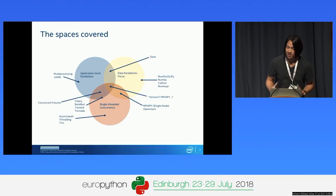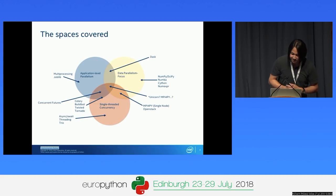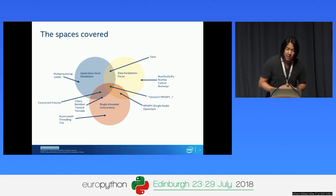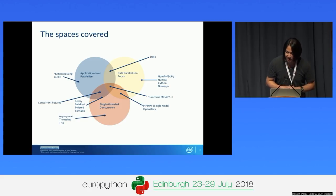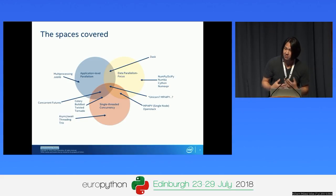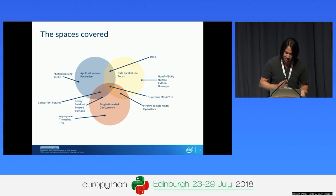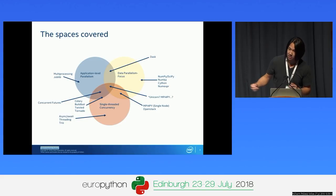When most people think they need parallelism, they most likely just need concurrency. For application level parallelism, you're seeing multi-processing, joblib, and similar frameworks in that space. Dask also encompasses part of that framework. In the data parallelism focus, packages like NumPy, SciPy, Numba, Cython, and NumExpression all sit in that area because they understand data parallelism is where they want to focus.